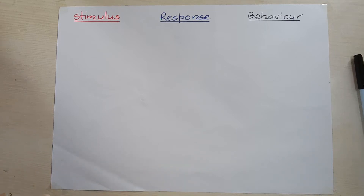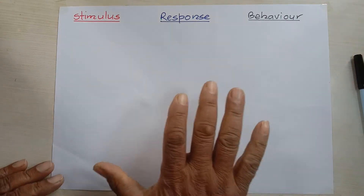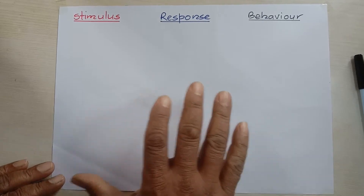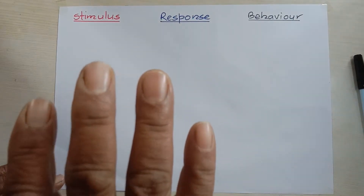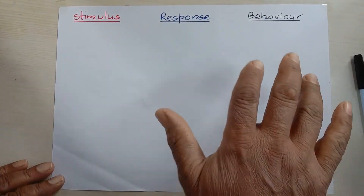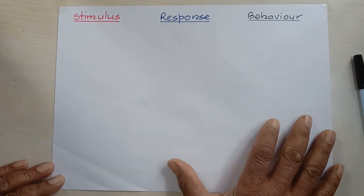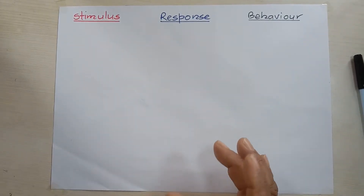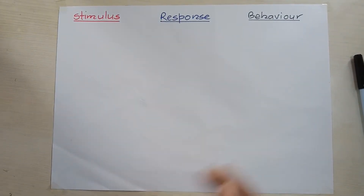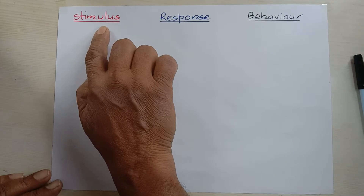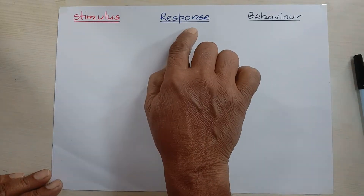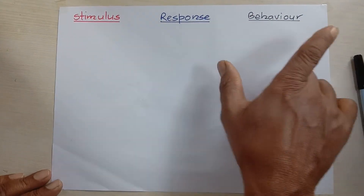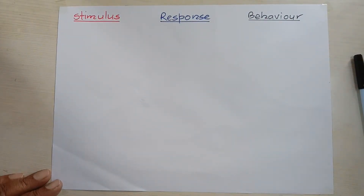If you want to learn the human nervous system, you must have an idea about these three basic terms before entering into it. What are they? Number one is stimulus, second is response, and third is behavior.